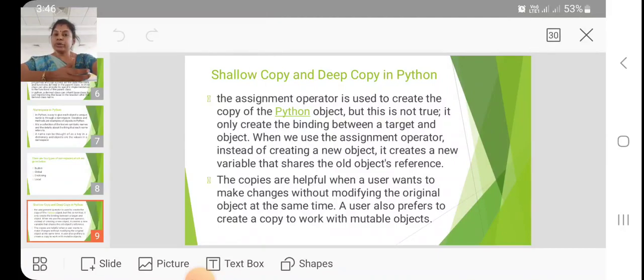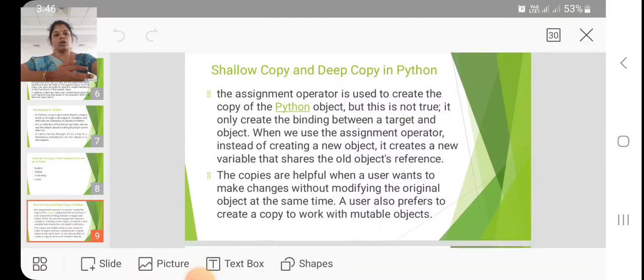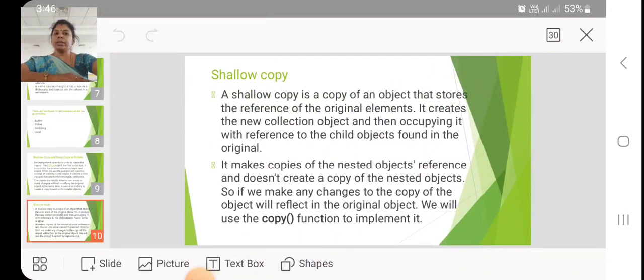The copies are helpful when a user wants to make changes without modifying the original object at the same time. A user also prefers to create a copy to work with mutable objects. A shallow copy is a copy of an object that stores the reference of the original elements. It creates the new collection objects and then occupies it with the reference to the child object found in the original. It makes copies of nested objects also. The function used is copy function to implement it.